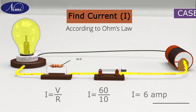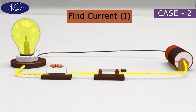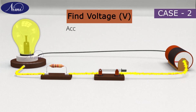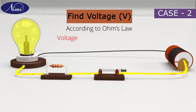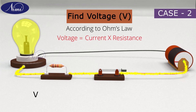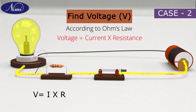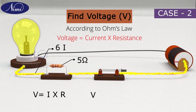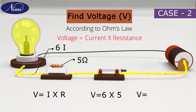In case 2, to find the value of voltage, according to Ohm's law, voltage is current into resistance, that is V is equal to I into R. And by substituting the value of current and resistance in the formula, we obtained voltage as 30 volts.